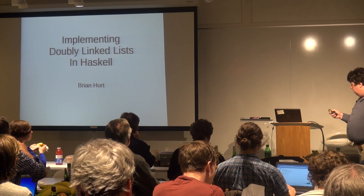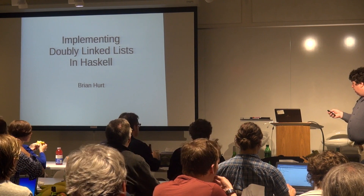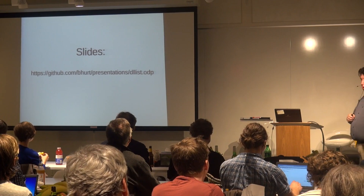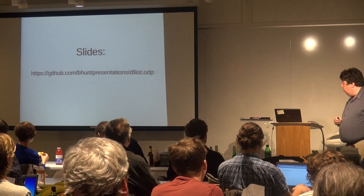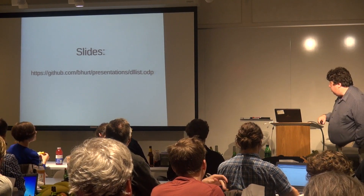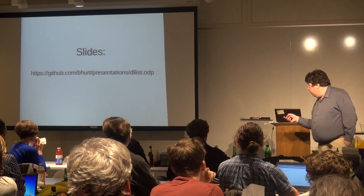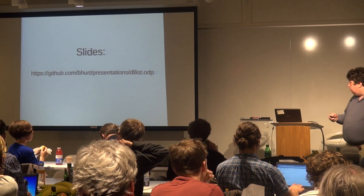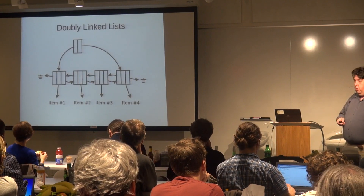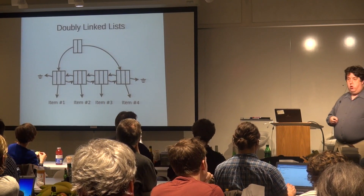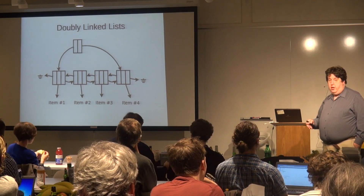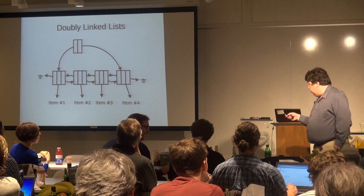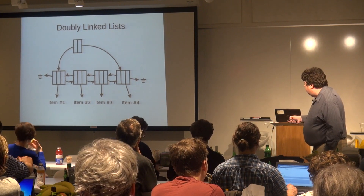The slides are up on my GitHub repo if people want to follow along at home. I'll repeat the URL later — it's basically github slash bhurt slash presentations DL list. I wanted to start with a refresher on what a doubly-linked list is and why you would want one, for those who have slept through introductory algorithms and data structures.